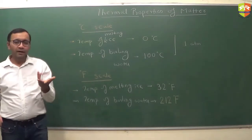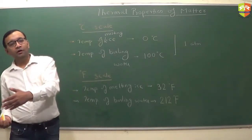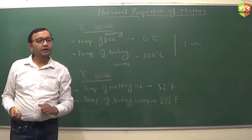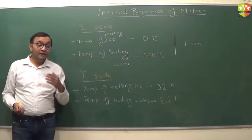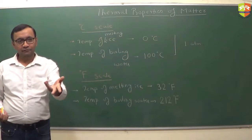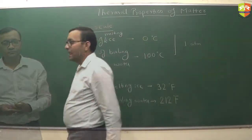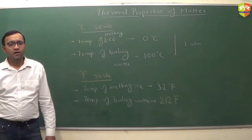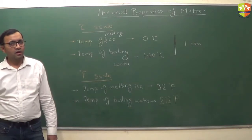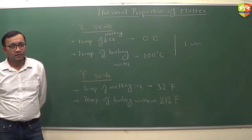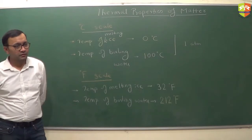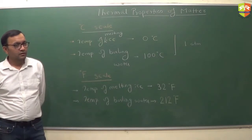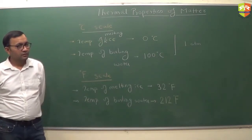Now if I tell you a temperature in degree Celsius, can you convert it to Fahrenheit? Assume temperature in degree Celsius is C. What is F? Take the ratio. C divided by 100 minus 0, the division of the scale from any point and the lower point of the scale — so C divided by 100 equals F divided by something.